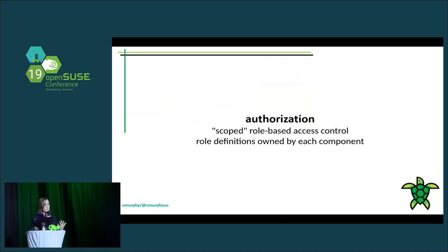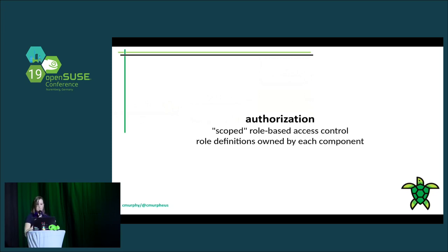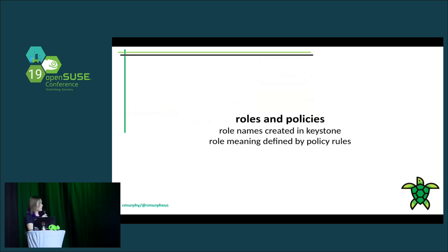Keystone doesn't just need to worry about users logging into OpenStack in general — it needs to worry about users logging into a tenant in OpenStack, having the permissions to do what they need, and not being allowed to do anything else. We've called this scoped RBAC because regular role-based access control doesn't really fully describe the tenancy component of authorization. This is made harder by how OpenStack is designed with individual components, which means a role in Keystone is actually not owned by Keystone — it's owned by the individual service components.